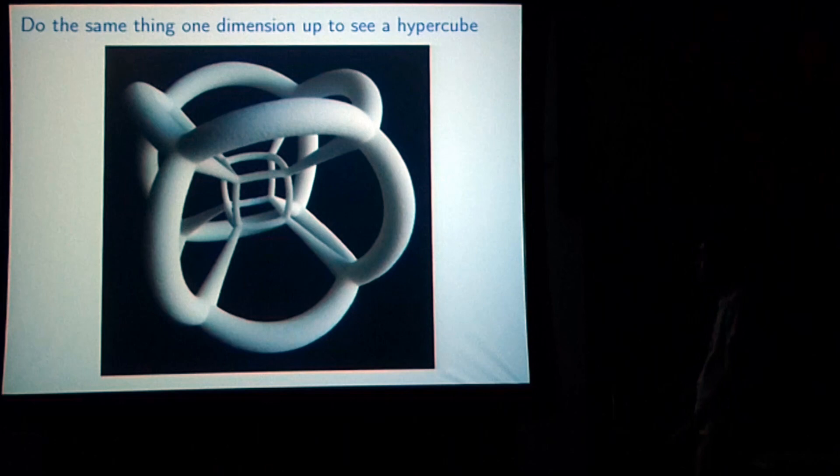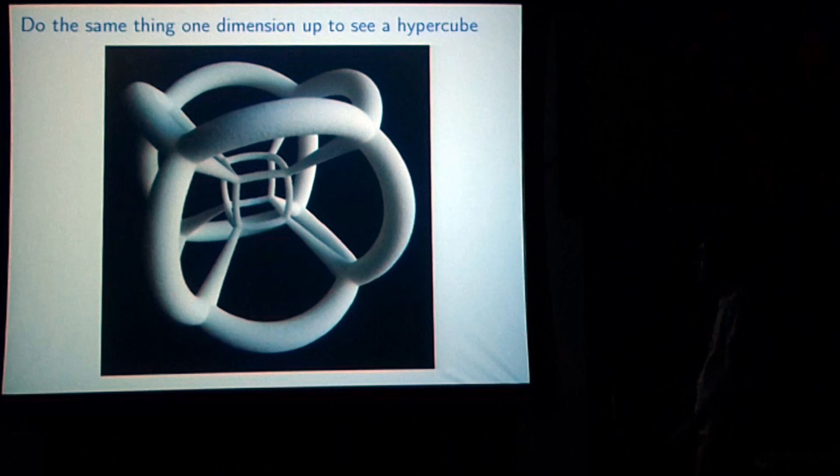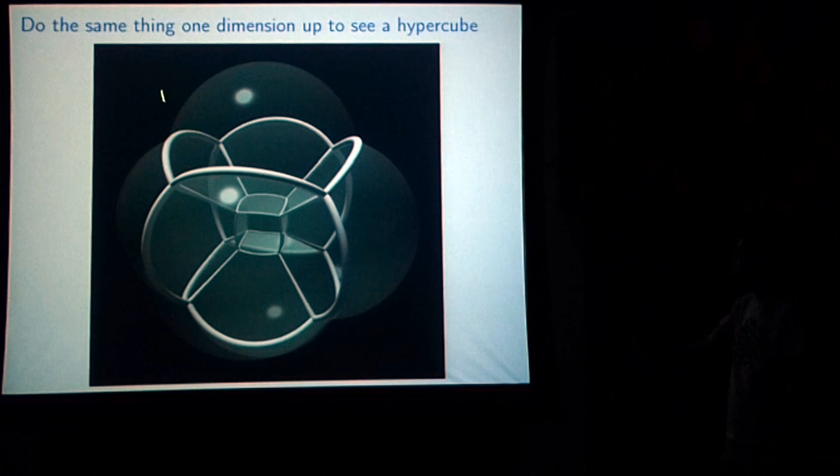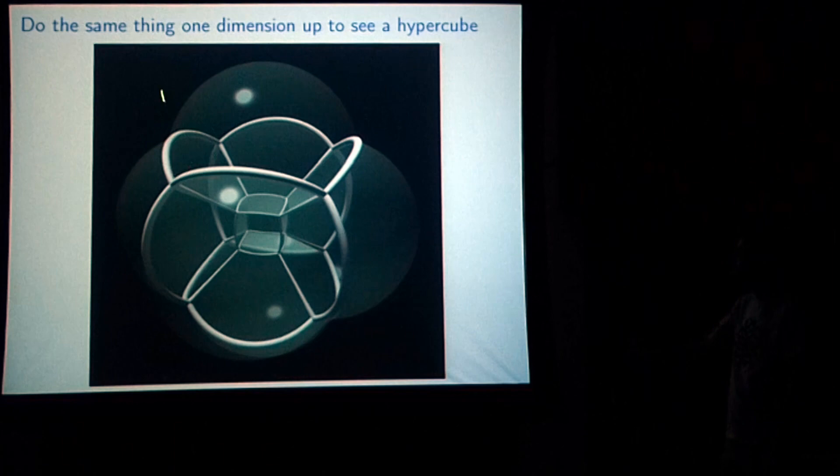It's a little hard to see where the cubes are in the 3D print, so sometimes we have to go back to computer-generated imagery. Here's another picture of the eight cubes: there's the one in the middle, six arranged around the outside, and then the eighth one — we're actually inside of it. So we're inside of the eighth cube of the hypercube.